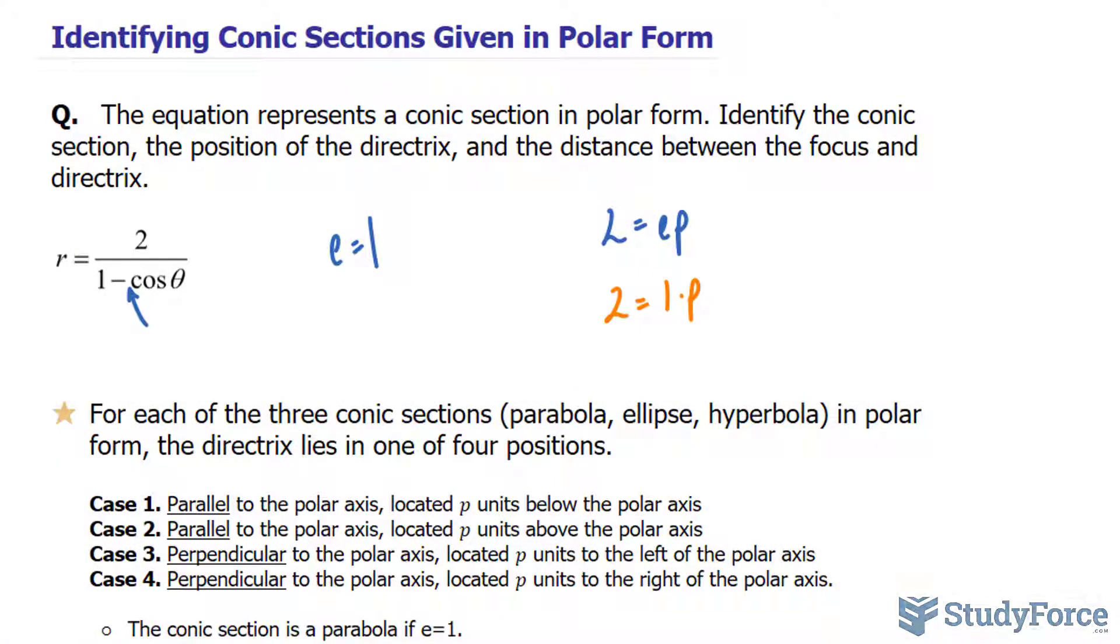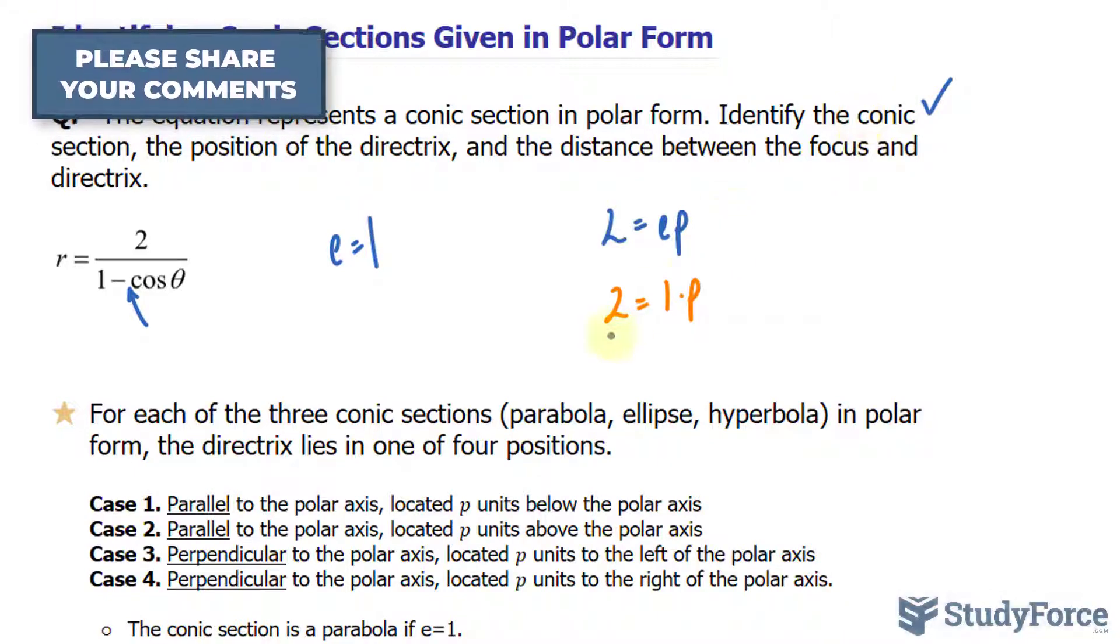Okay, let's check off what we've done so far. We've identified the type, it is a parabola. The position of the directrix, it is two units to the left of the polar axis.